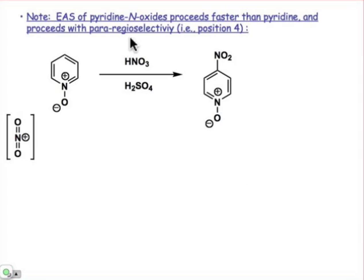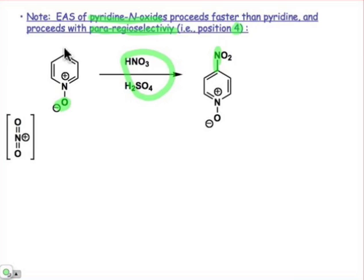We mentioned pyridine N-oxides, and it turns out we can actually enhance the nucleophilicity of that π system by first putting an oxygen on the nitrogen. The oxygen has a non-bonding pair of electrons that it can donate into the π system, and that enhances the reactivity and also the regioselectivity for the 4-position. If we nitrate pyridine N-oxide under conditions of nitric acid and sulfuric acid, substitution takes place at the 4-position.